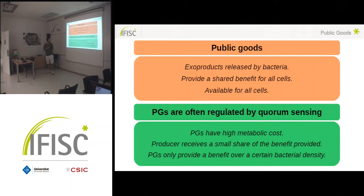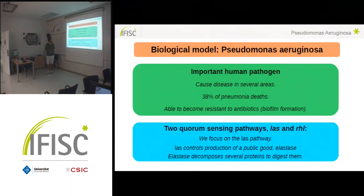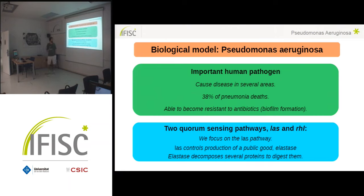Even when the public goods provide a benefit to individuals, the producer has more cost than the benefit produced. We need at least a minimum density of individuals producing these extra products in order to have a net benefit for the population. The objective of quorum sensing is to avoid the production of public goods before we have this density, and then start producing them when we know it is going to be beneficial.